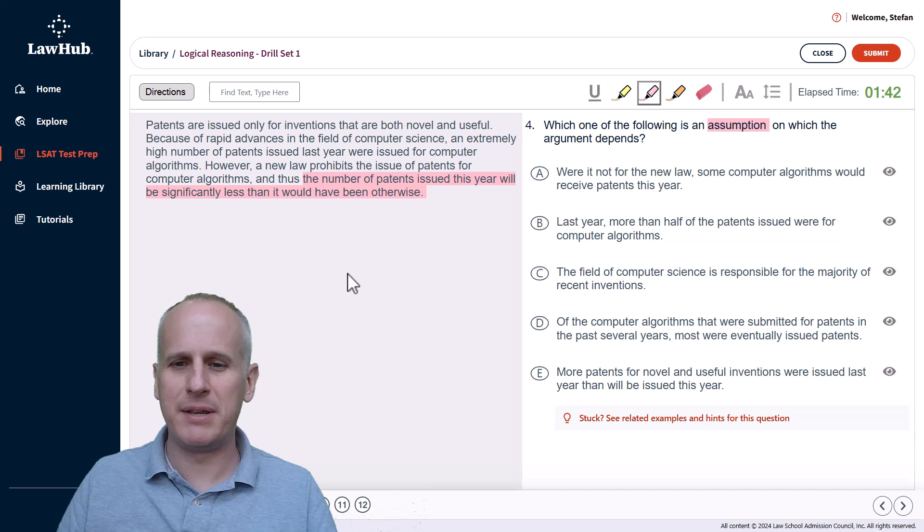Now we keep that tool highlighted because we want to be identifying reasons to eliminate as we go to expedite our evaluation of the problem. Starting with choice A: were it not for the new law, some computer algorithms would receive patents this year. Considering this, the new law is relevant, computer algorithms are relevant, and receiving patents this year is certainly relevant. So there's nothing to immediately eliminate for in choice A. And when it comes to assumption tasks in particular, you might just leave anything that seems broadly relevant open because you can use what is known as the negation test to determine whether an answer choice is an assumption if necessary. So we'll just hold on to A because there's nothing immediately apparent as far as a reason to eliminate.